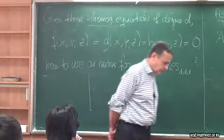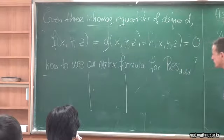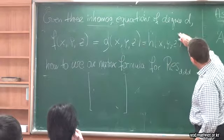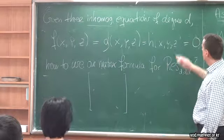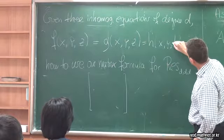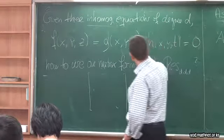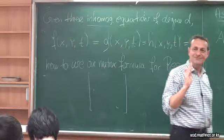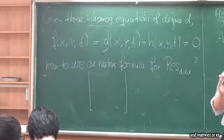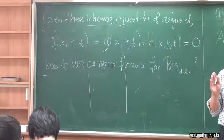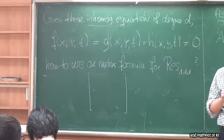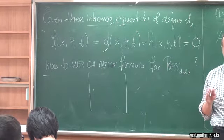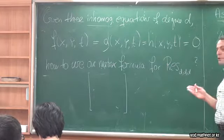The first thing we do is replace the variable z by t, just to keep things straight. So I'm going to call z as t. I have inhomogeneous equations in x, y, and t, and I'd like to use the resultant formula for homogeneous equations in x, y, and z. So we need to homogenize this — we want to turn this into a polynomial.